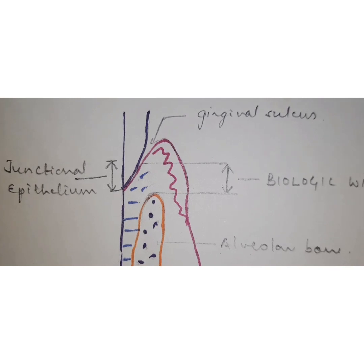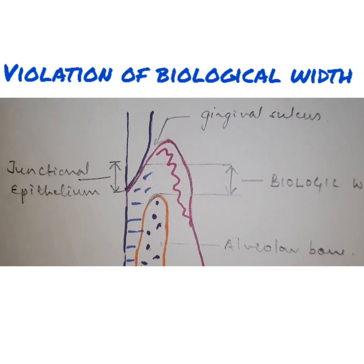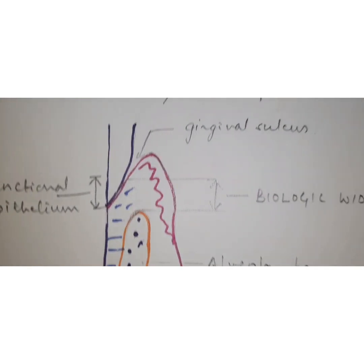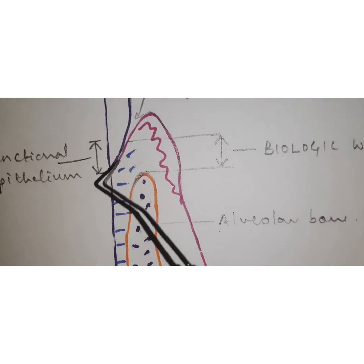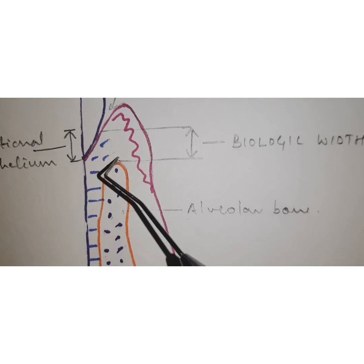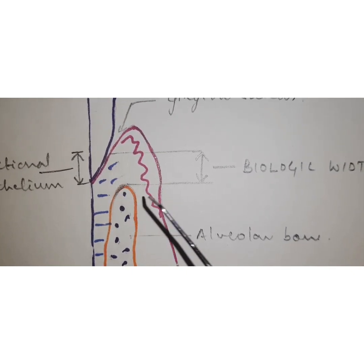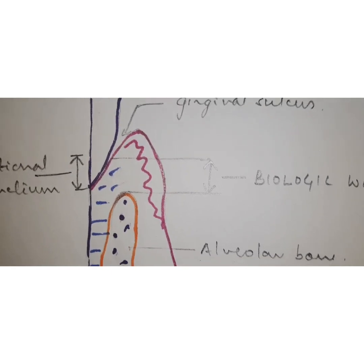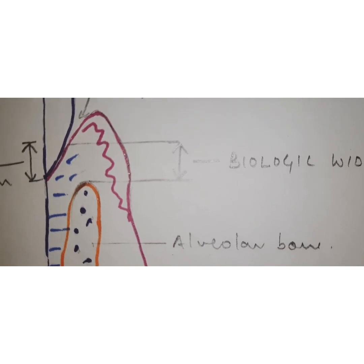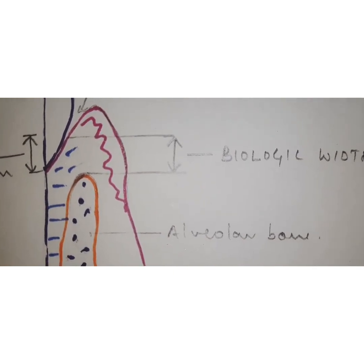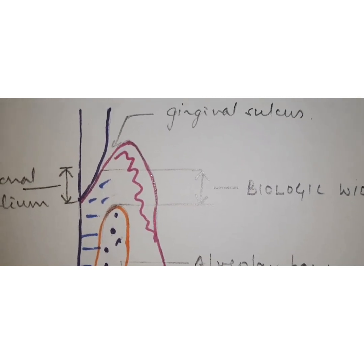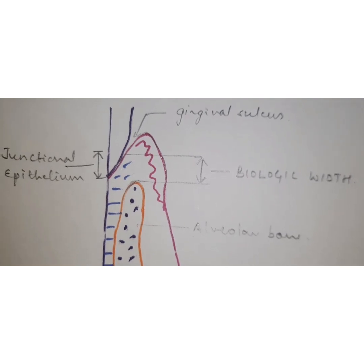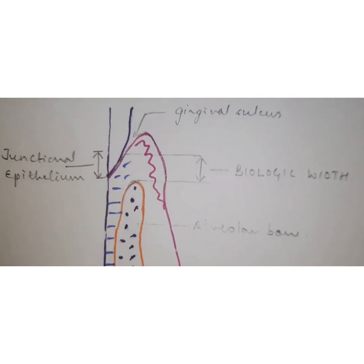Another factor is an inadequate zone of attached gingiva - subgingivally placed margins sometimes lack a band of firmly attached gingiva, and subgingival finish lines are contraindicated in patients with little or no attached gingiva, as this may result in gingival inflammation, attachment loss, deep periodontal pockets, and gingival recession. Finally, violation of the biological width - the combined width of epithelium and connective tissue above the alveolar bone crest, approximately 3 millimeters - leads to attachment loss, bone loss, mobility, and failure of treatment. With this we come to the end of the presentation.